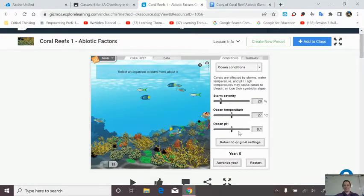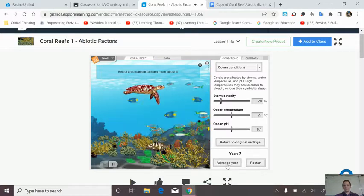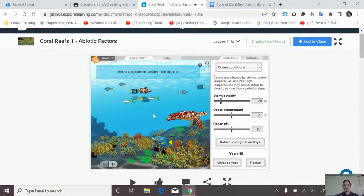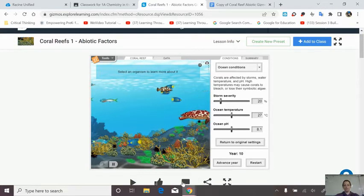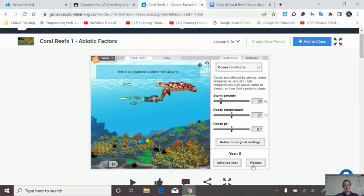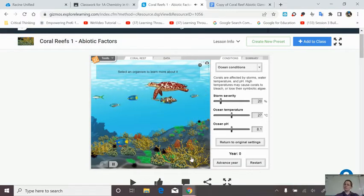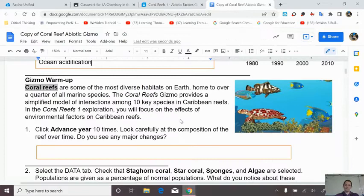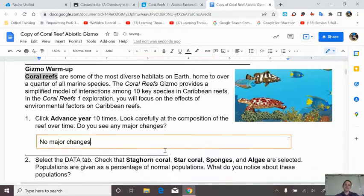Let's look at the vocabulary. If you look up here, you see ocean acidification and pH. And since we're talking about acid rain, those are probably indicators. So we're going to put ocean acidification. Now let's go ahead. Click advance 10 years. Look carefully at the composition. Do you see any major changes?